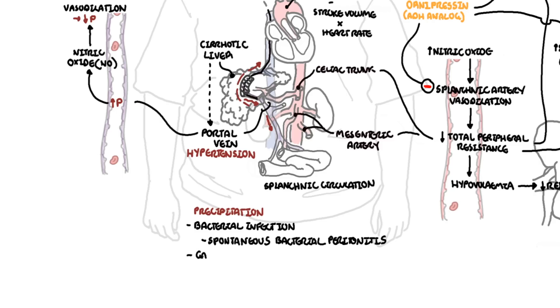Another important precipitating factor includes gastrointestinal bleeding from portal hypertension and varices forming in the esophagus or stomach.